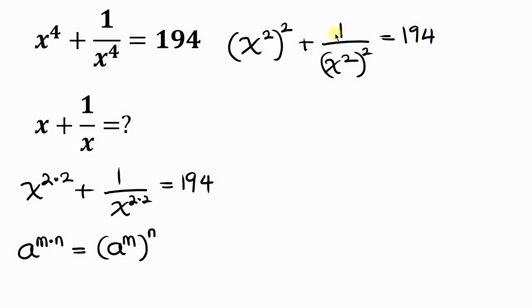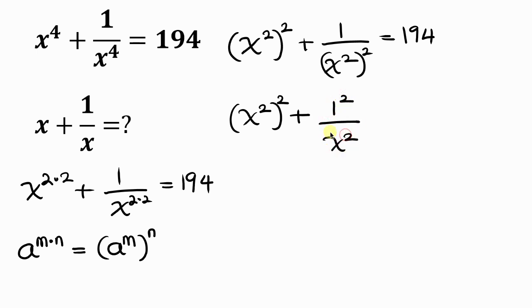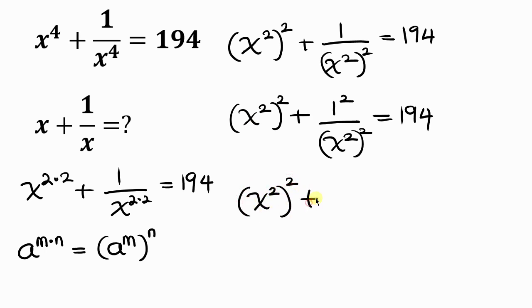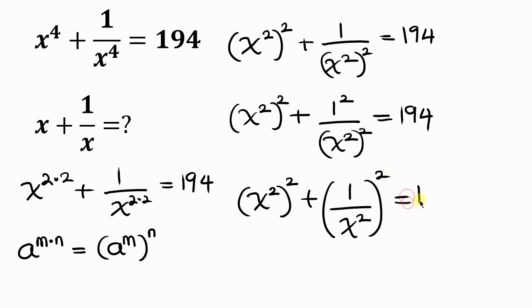This expression can be simplified: we have x squared raised to the power of 2 plus 1 squared over x squared raised to the power of 2, equal to 194. Since both terms share the same power of 2, we can combine them as x squared plus 1 over x squared, all raised to the power of 2, equal to 194.